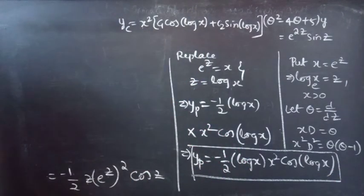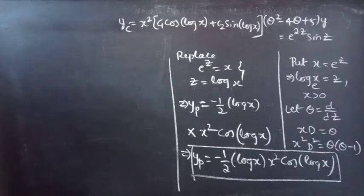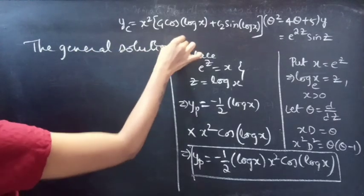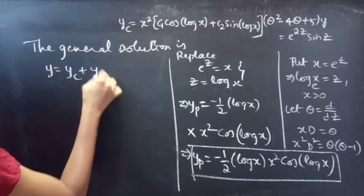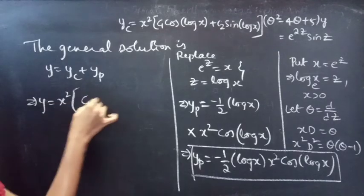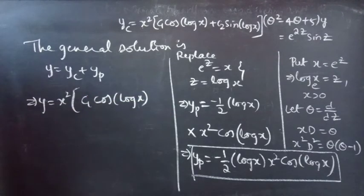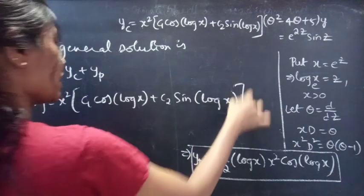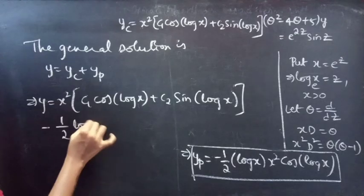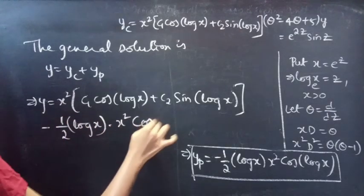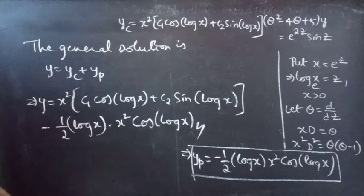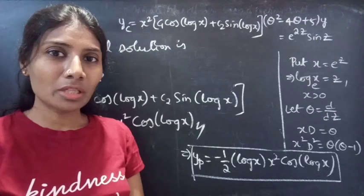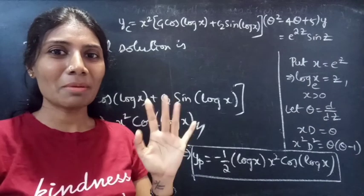We have yc and yp, so the general solution is y equals yc plus yp: y equals x²(c₁ cos(log x) + c₂ sin(log x)) minus (1/2) log x · x² · cos(log x). This is the required solution. We have seen a problem from higher order linear differential equations with variable coefficients. Hope you understand — see you in the next video.